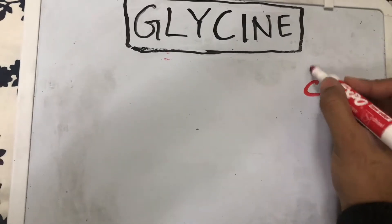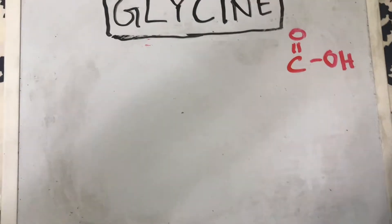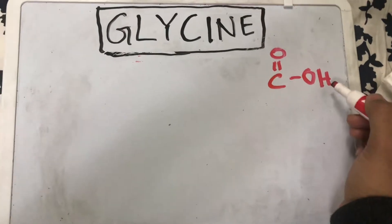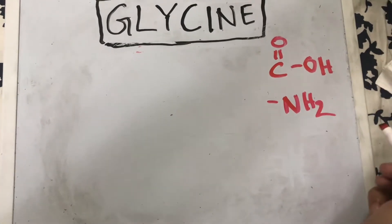They have a carboxylic acid group, which is drawn as a carbon double bonded to an oxygen and single bonded to a hydroxyl OH group. They also have what we call an amino group, which is NH2.